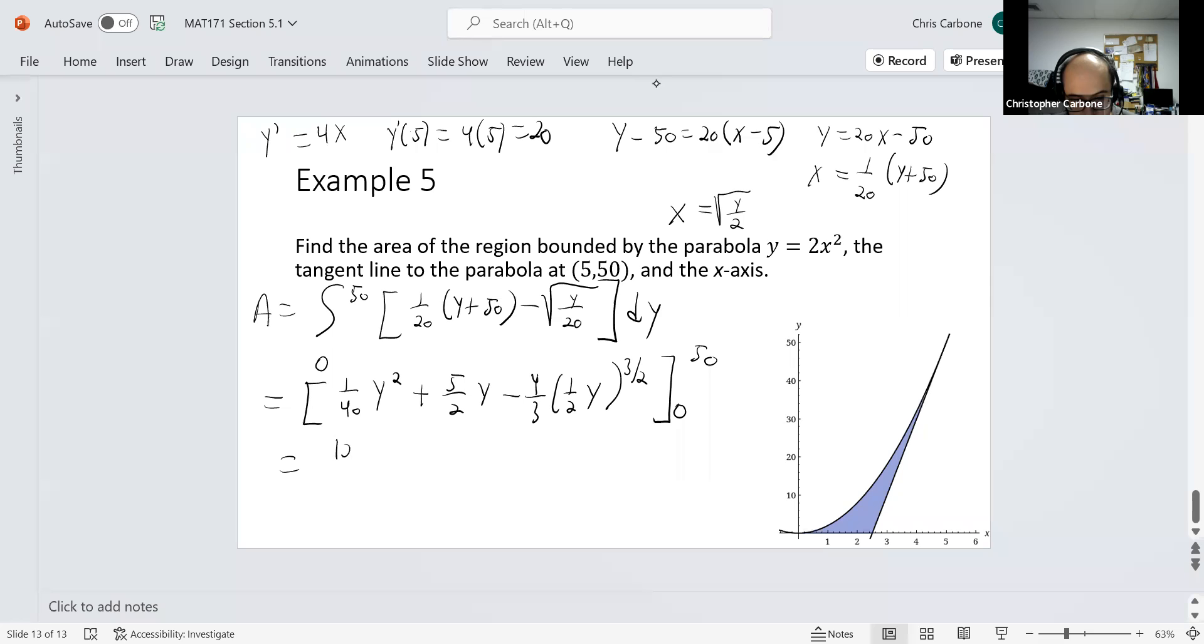125 over 2 plus 125 minus 500 over 3, and this makes 125 over 6 as this blue area on this graph. Let me know if you have any questions or concerns. Thank you.